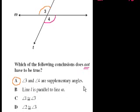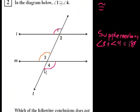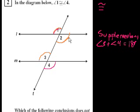Answer B: line L is parallel to line M. That's true. If angle 1 equals angle 4, and opposite angles are equal, so angle 1 is congruent to angle 2. If L and M are parallel, then angles 2 and 4 are the same. Or thinking the other way: if 4 and 1 are the same, and 1 is the same as 2, then 4 is the same as 2 — which means the two lines are parallel. So this is definitely true.